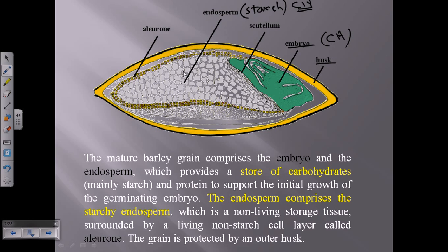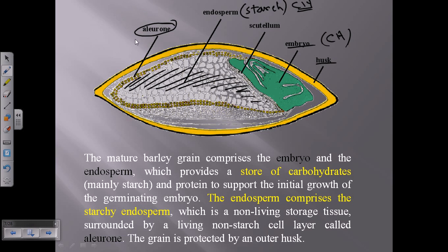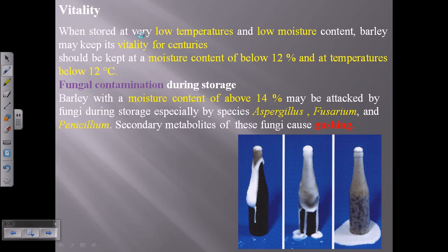The whole endosperm layer is the starch layer. Surrounding this layer we have aleurone, which is a living, non-starch cell wall layer. It is a kind of living cell wall layer surrounding the endosperm.